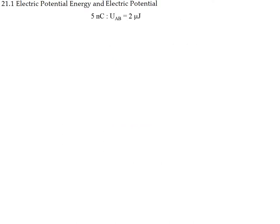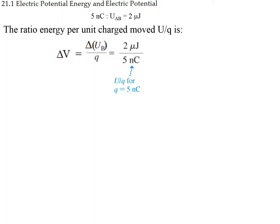With that we can calculate the electric potential energy per unit charge by dividing by the charge. For 5 nanocoulombs the potential energy is 2 microjoules. We call this ratio the electric potential — not energy, but electric potential. U is electric potential energy; V is electric potential. The units are joules divided by coulombs, which are known as volts.